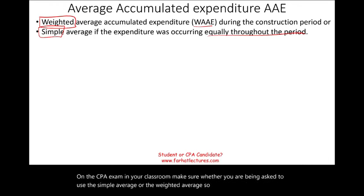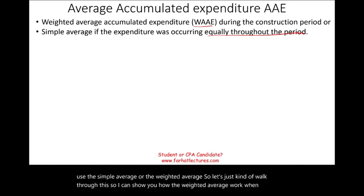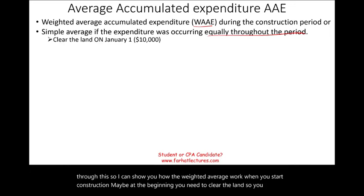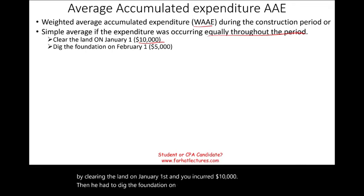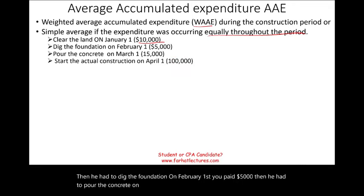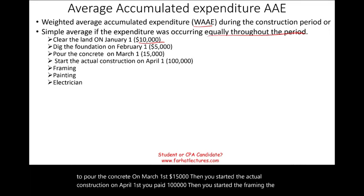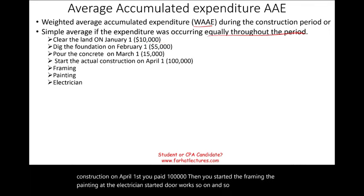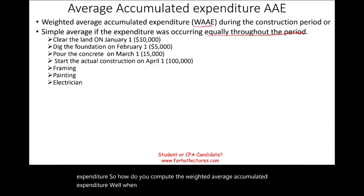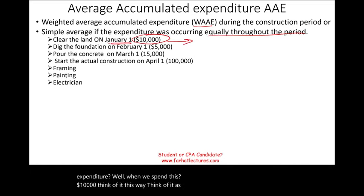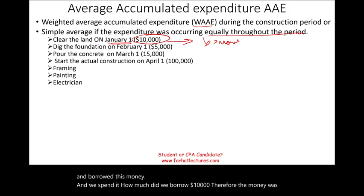Let's walk through how the weighted average works. When you start construction, you clear the land on January 1st and incur $10,000. Then you dig the foundation on February 1st for $5,000. You pour the concrete on March 1st for $15,000. Then the actual construction starts on April 1st for $100,000, followed by framing, painting, electricians, and so on. The $10,000 spent January 1st was outstanding for 12 months — theoretically, you borrowed that money then and that's when the interest starts.